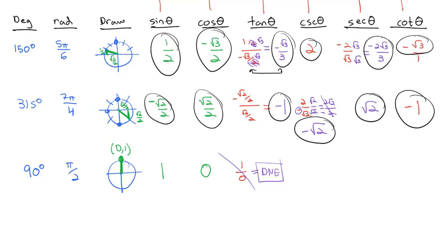For cosecant, the reciprocal of sine: the reciprocal of 1 is 1. For secant, the reciprocal of cosine is 1 over 0, which is again undefined and does not exist. However, cotangent does exist: tangent was 1 over 0, so cotangent is the reciprocal, 0 over 1, which equals 0. This shows that all six trig ratios don't necessarily always exist.